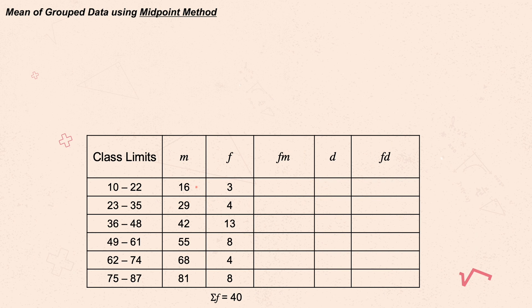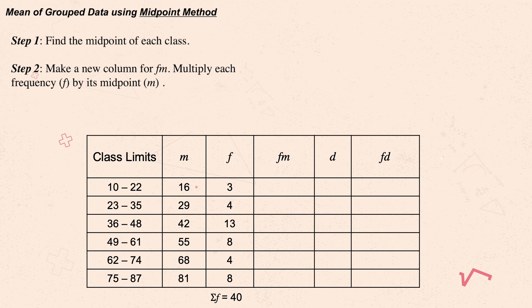Using the data of ages of 40 diabetics, let's start with the midpoint method. Step one: find the midpoint of each class — the midpoints of the six classes were already included in the table. Step two: make a column for fm by multiplying each frequency by its midpoint. The values are: 16×3=48, 29×4=116, 42×13=546, 55×8=440, 68×4=272, and 81×8=648.